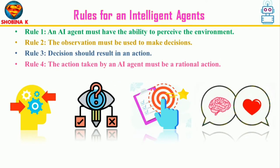There are four main rules for an AI agent. Rule 1: an AI agent must be able to perceive the environment using its sensors. Rule 2: the environmental observation must be used to make decisions. Rule 3: the decision should result in a tangible action. Rule 4: the action taken by an AI agent must be rational — meaning actions that maximize performance and yield the best positive outcome.